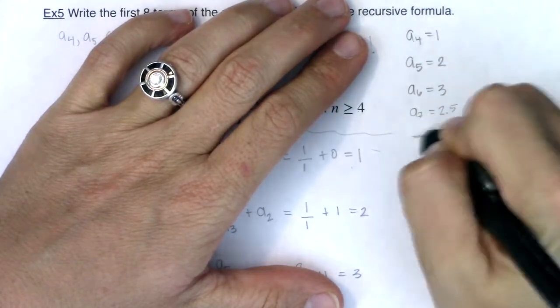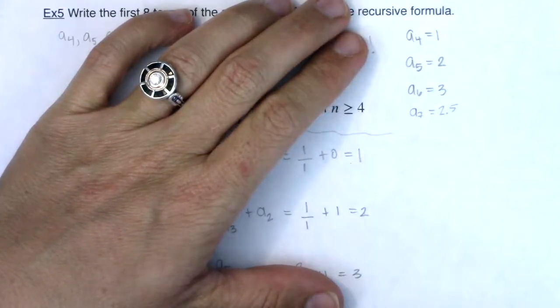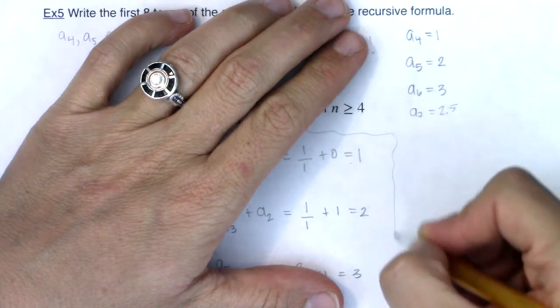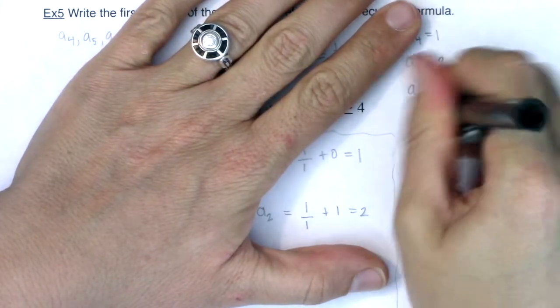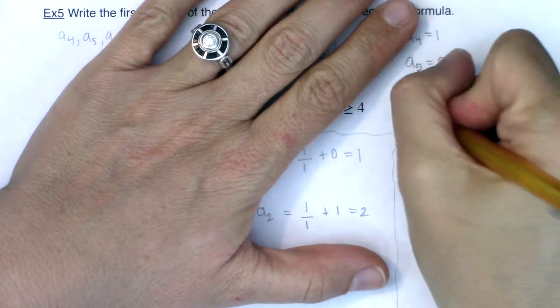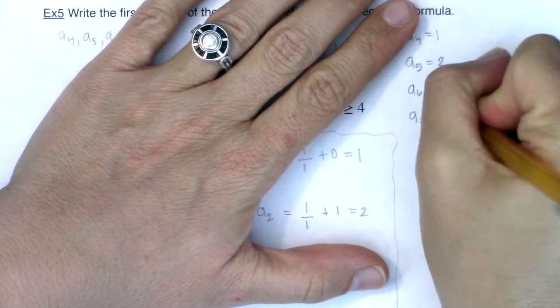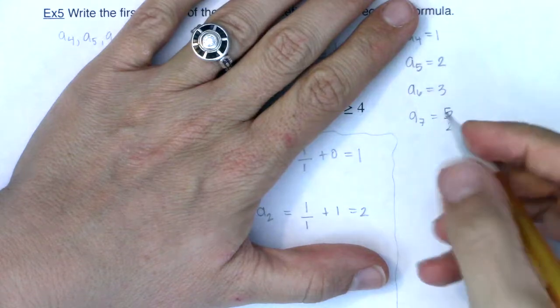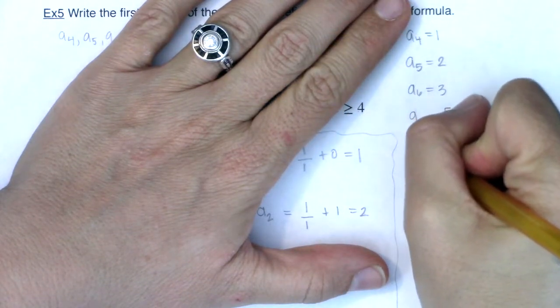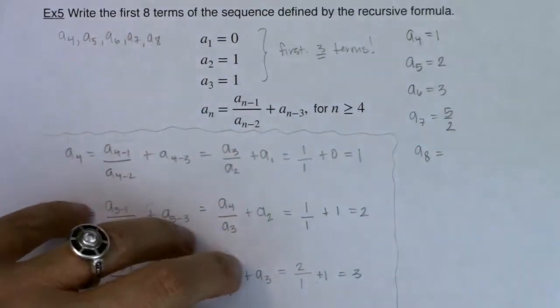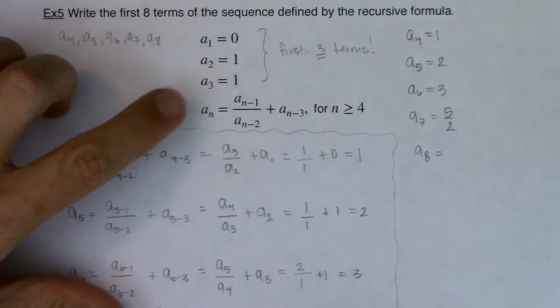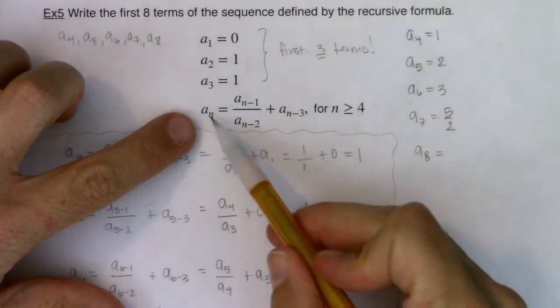And I'm going to scooch this back down just so you can see my running tally, right? I've got this list generated. Let me give myself a little bit more space so that I can continue my list. So at this point, I know a sub seven. I'll rewrite it as the fraction. You could write five halves or 2.5. But I'm getting close. All I need now is a sub eight.